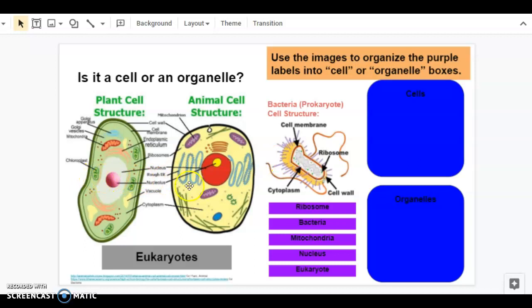The plant and animal cell are eukaryotes. They're called eukaryotes because they have a true nucleus, and you can see the nucleus in each cell. Here is the nucleus in the plant cell. Here is the nucleus in the animal cell.